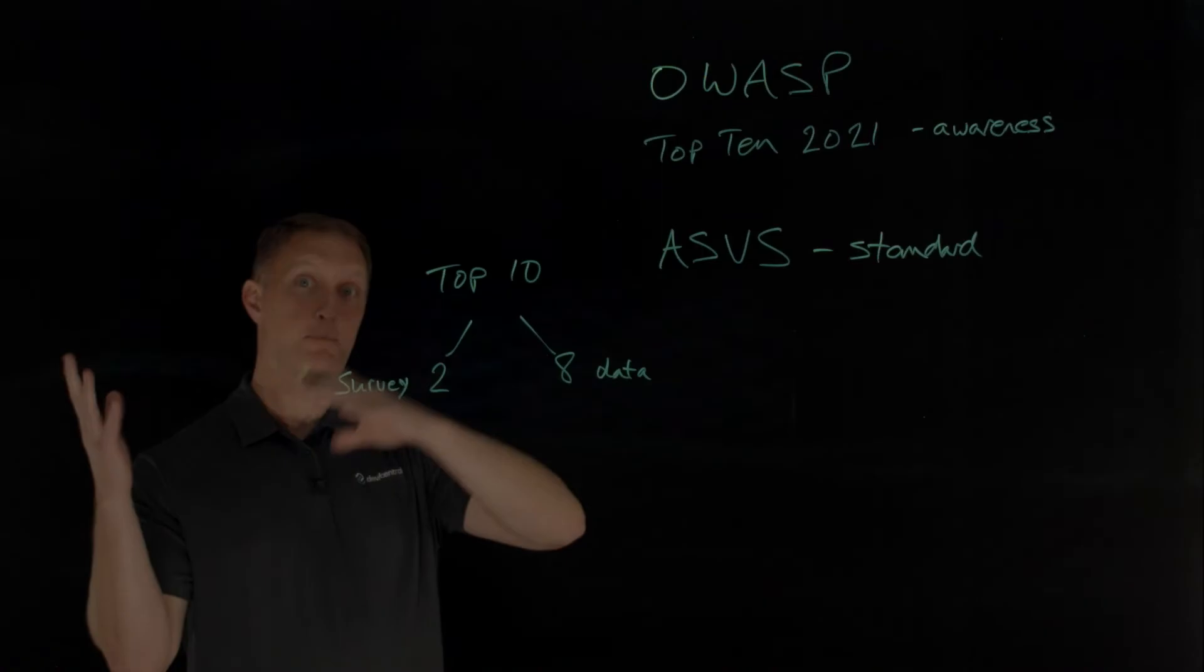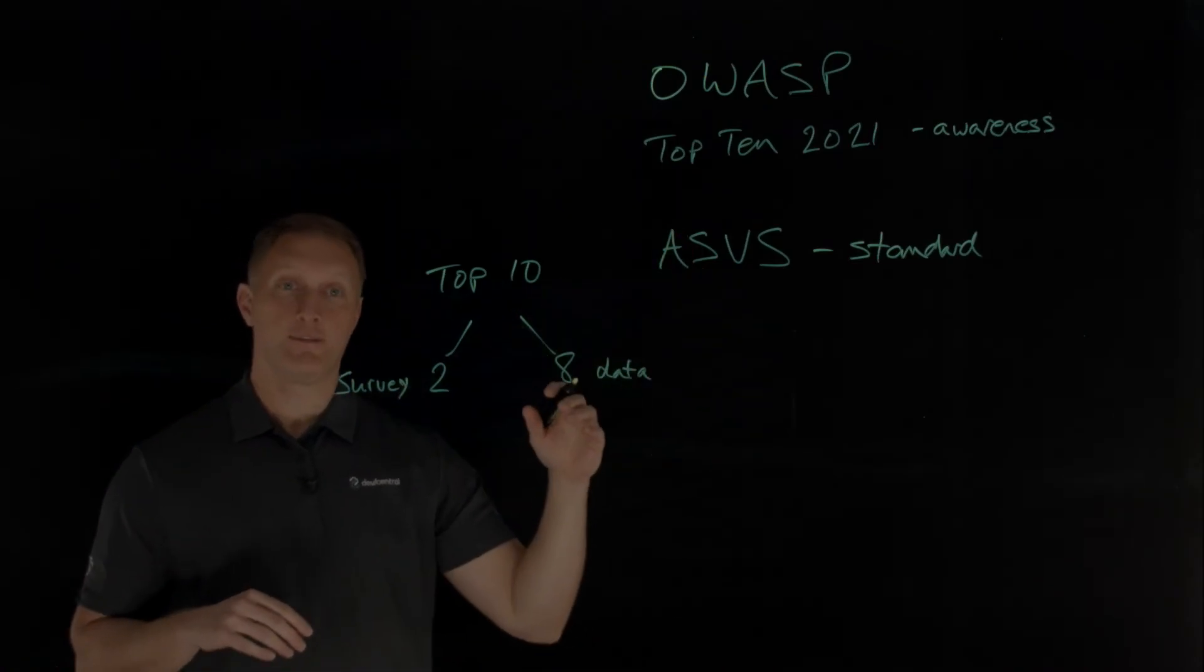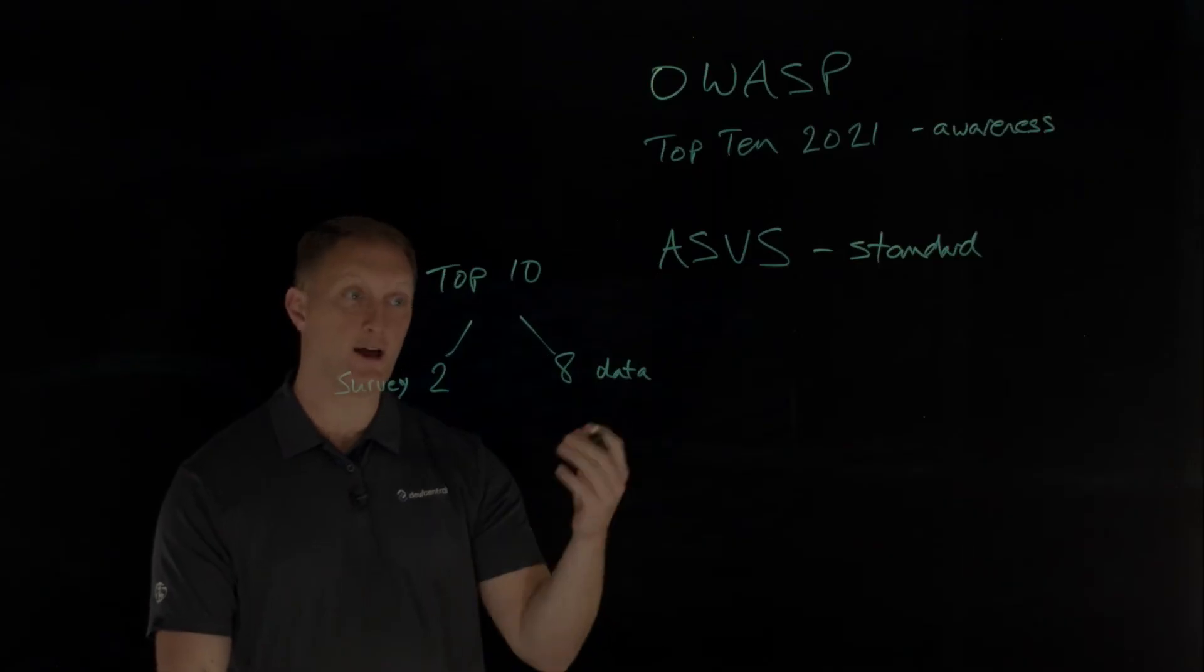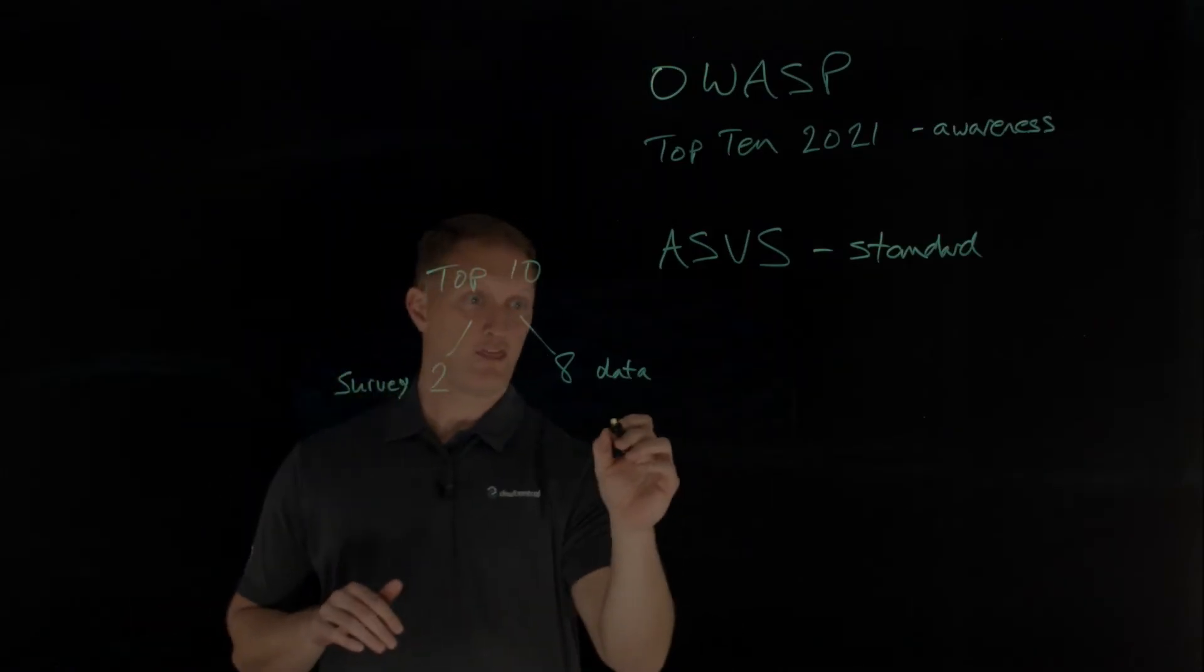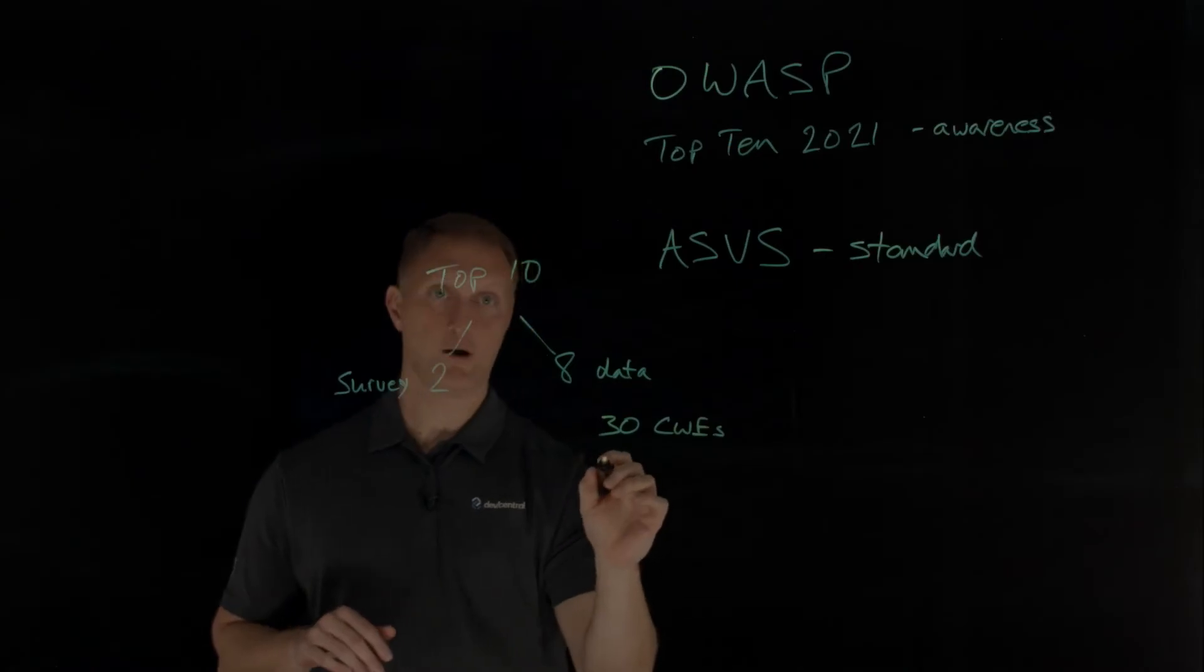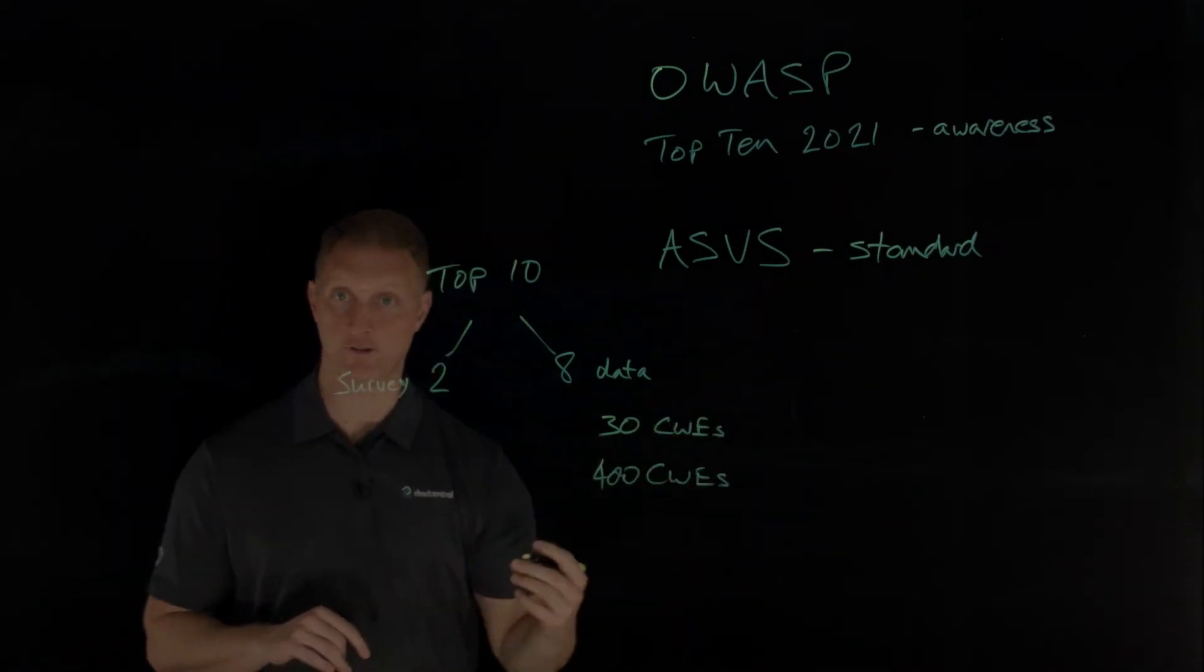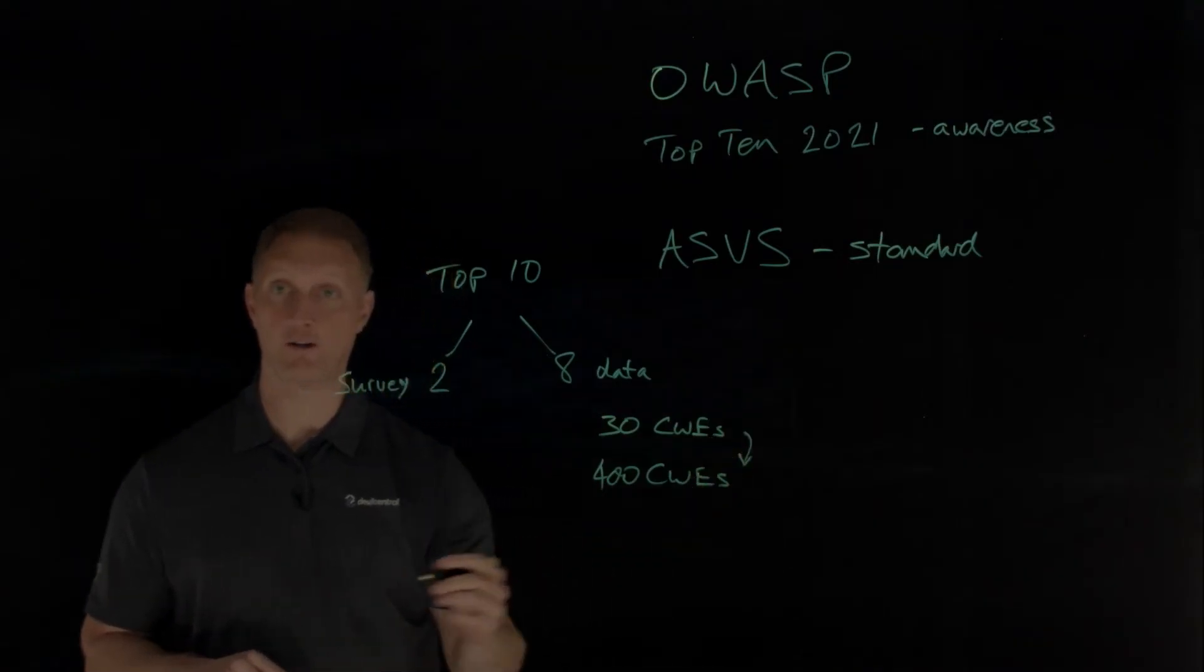In the past, they would focus on about 30 or so, but in this iteration of 2021, they said let's just open it up and ask for data on the data portion of this. There's no restriction on the number or types of CWEs. They went from about 30 CWEs previously up to almost 400 CWEs in this 2021 version. There's a lot to analyze there.